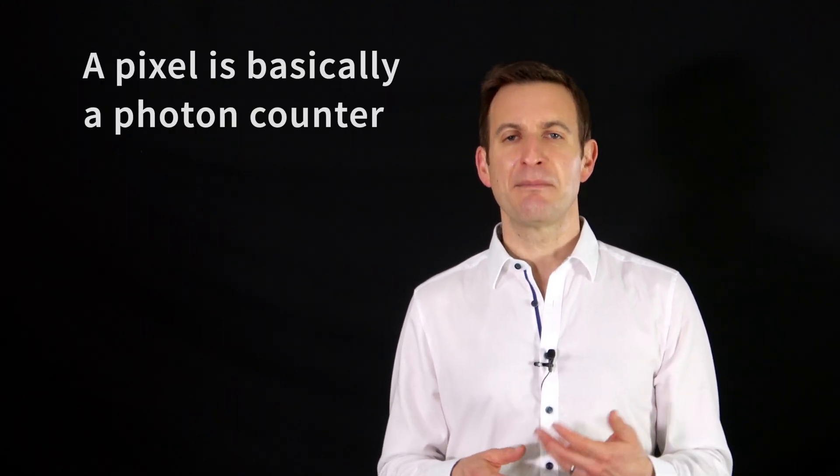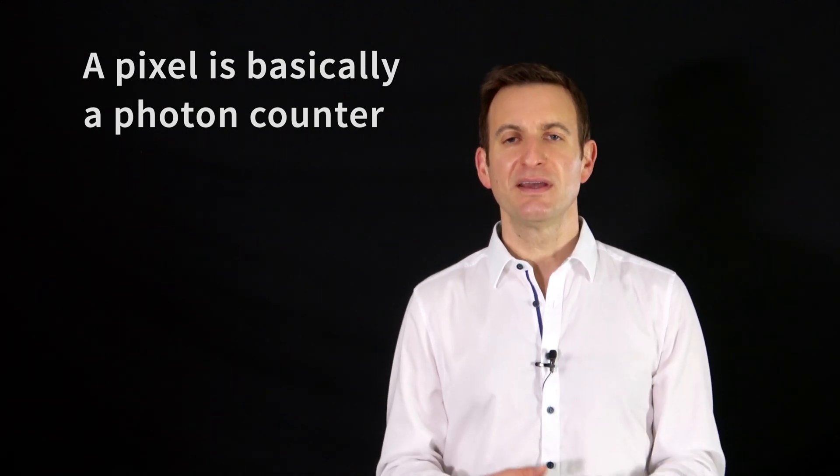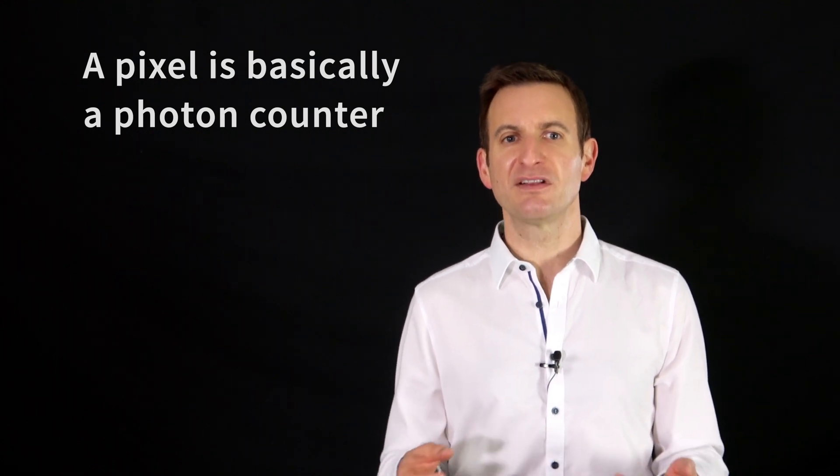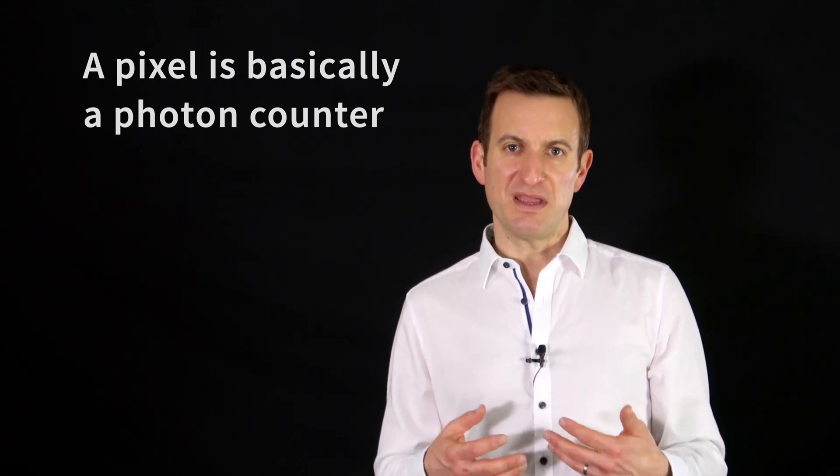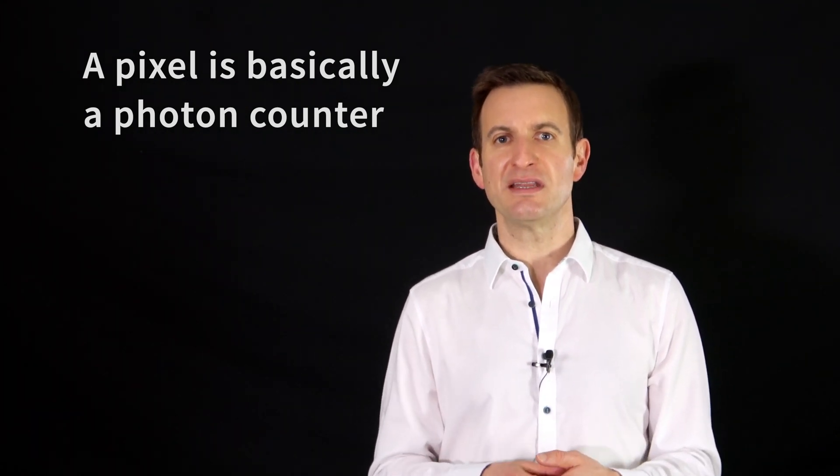It measures light by counting photons, the smallest elements of light. So your chip is basically a photon counter, and every pixel itself is also a photon counter. If we take an image, we basically count the number of photons that reach the individual pixels.